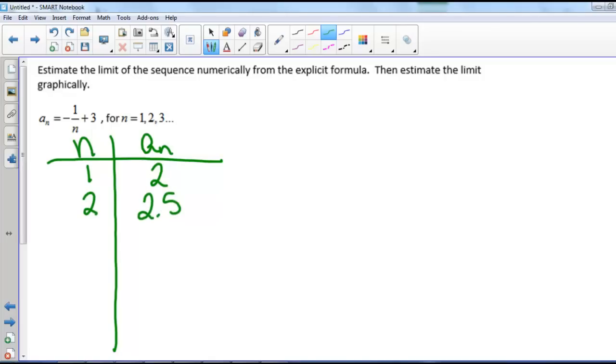If n equals 4, we have negative 1 over 4 plus 3, so that's 2.75. If n equals 5, we have negative 1 fifth plus 3, so that's 2.8.